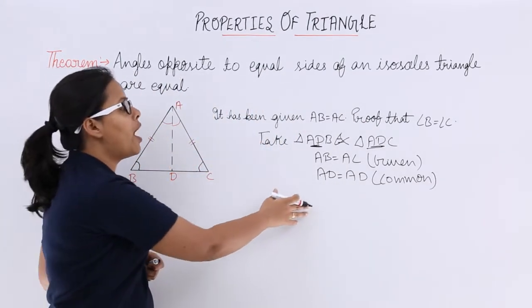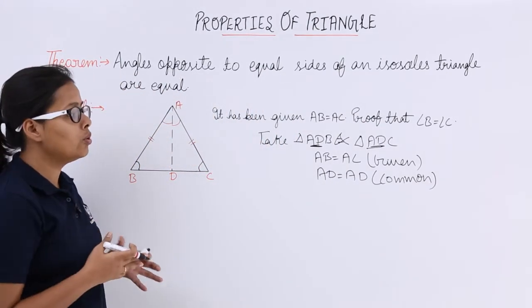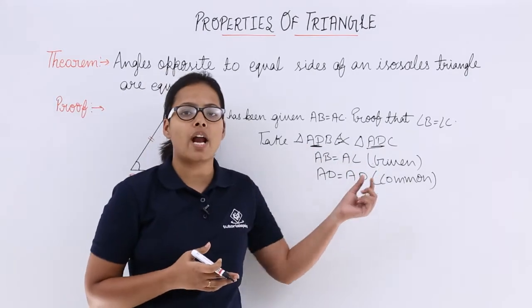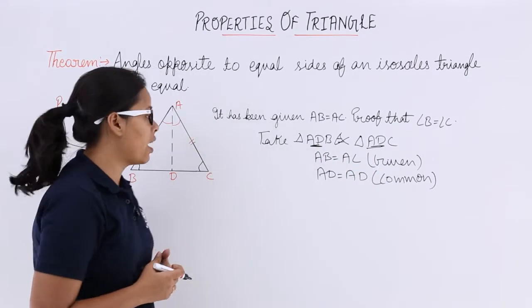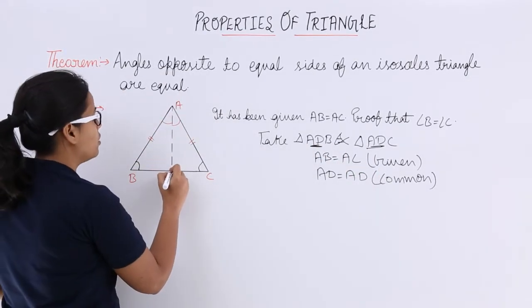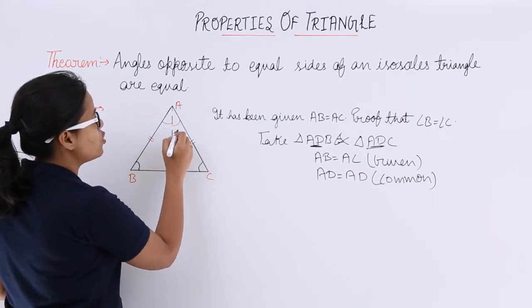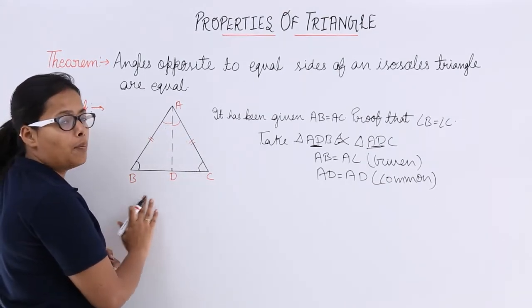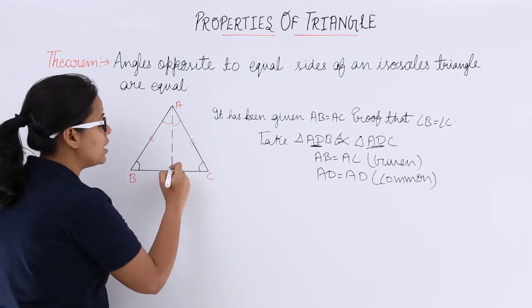What more do you have to find out here to prove that these two triangles are congruent triangles? So you need to see if these two angles are equal to prove angle B is equal to angle C.